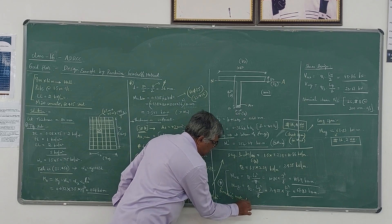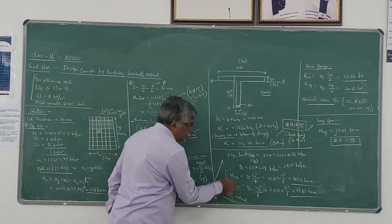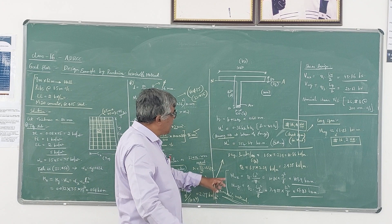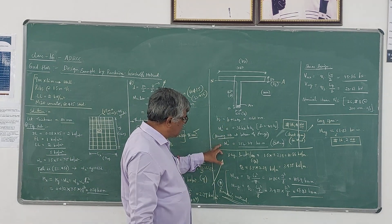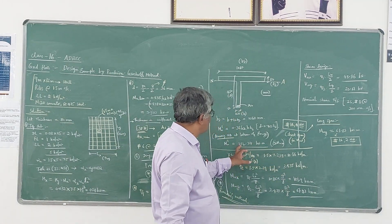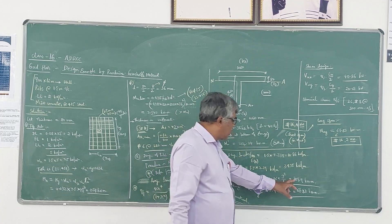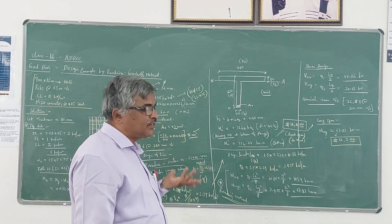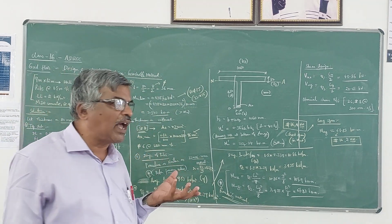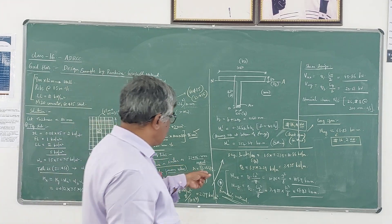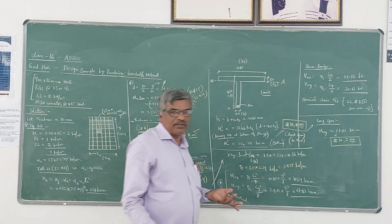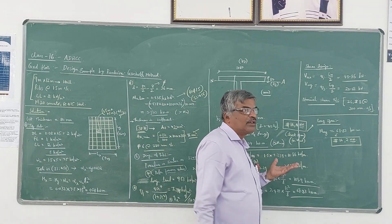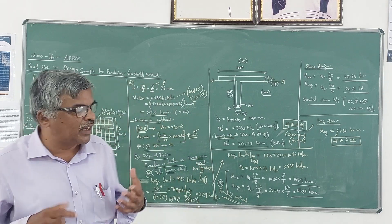This is the change for calculating the moments, this is the difference. Compare this moment of resistance value with the higher of these two. It is 254.24, the higher moment is 109.9, which is less than the moment of resistance. That means it is safe - the moment of resistance of the section is more than the maximum bending moment, so the section is safe.